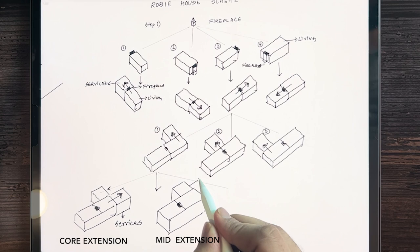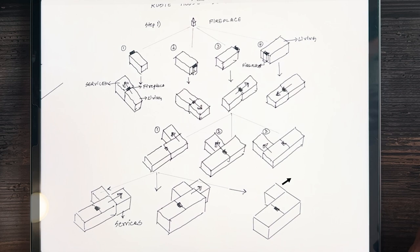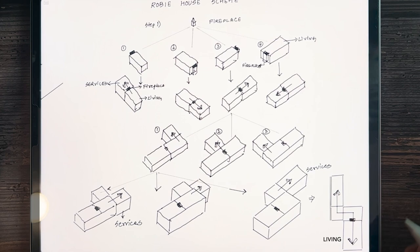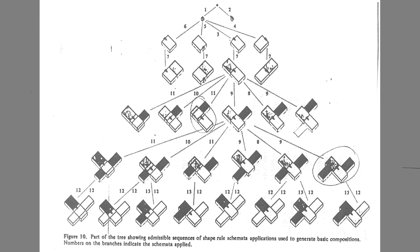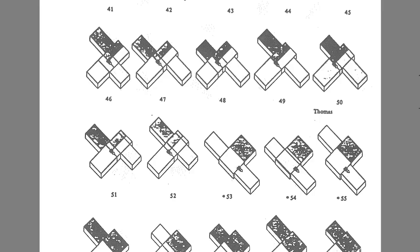This is the composition of the Robie House. If we trace the plan of this composition, we can understand the geometrical hierarchy of the space in which the fireplace is the hypothetical center. One side is the living area, the other side has services. We can further explore this tree to make various combinations — the basic composition can lead to 89 different architectural compositions, each with a different interior experience.